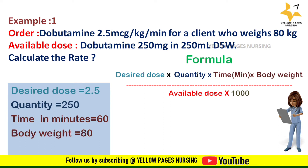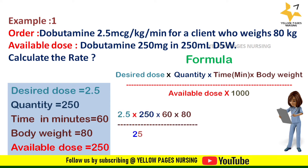Here the desired dose is 2.5, quantity is 250, time in minutes is 60, body weight is 80 kilogram — no conversion needed as it is already in kilograms. Available dose is 250. Applying all into the formula, we get the answer 12 ml per hour. So the rate of infusion for this calculation is 12 ml per hour.